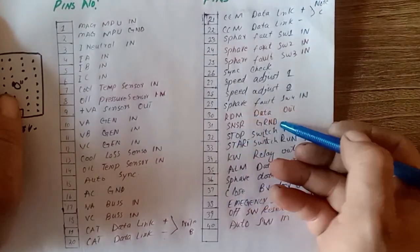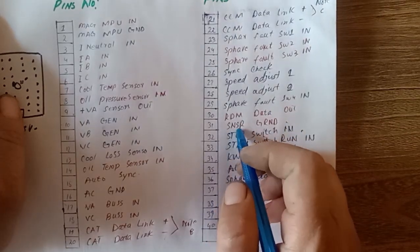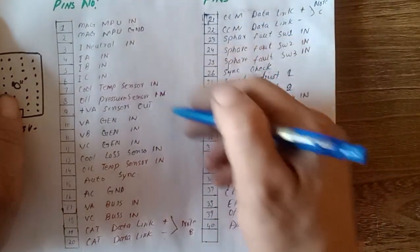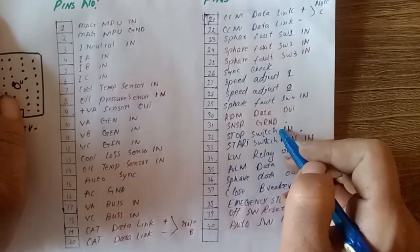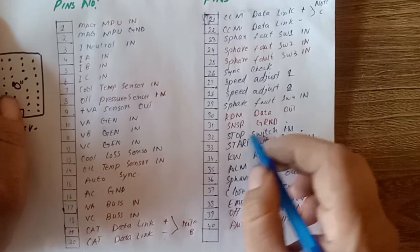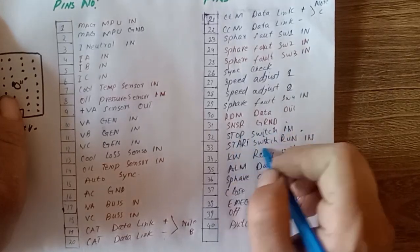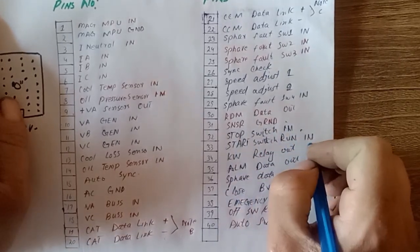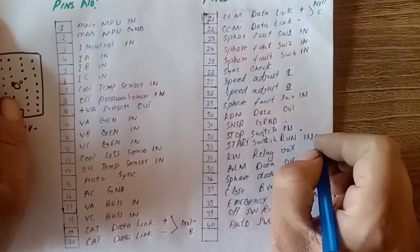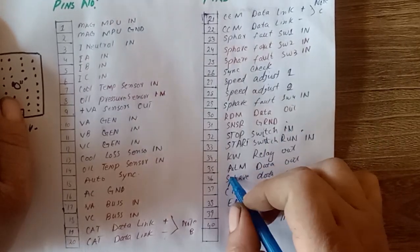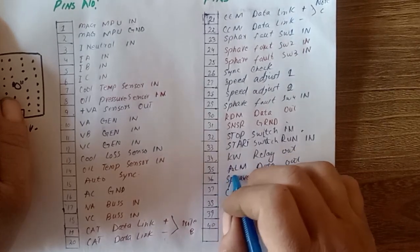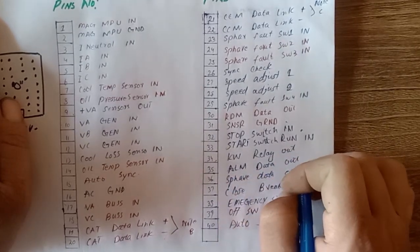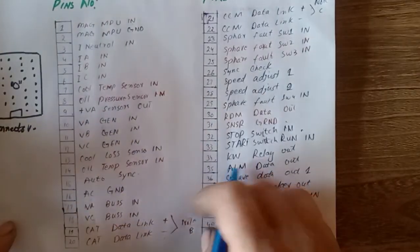Sensor ground - all sensor grounds you can connect here. Stop switch IN - your emergency stop switch connects here. Start/Run IN - you can start/run, like your accessory connection. KW relay out, ALM data out. ALM means Application Life Management.